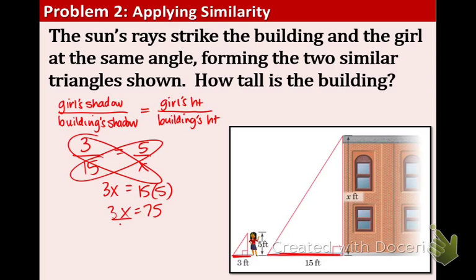Get the x by itself. Divide both sides by 3, and you get x equals 25, and it's measured in feet. So, the height of the building is 25 feet.